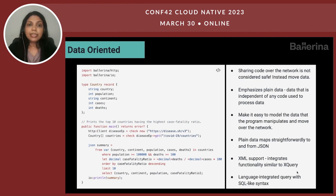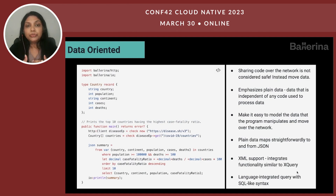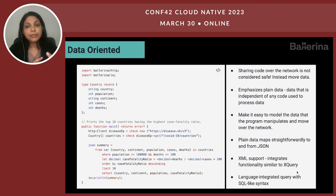In Ballerina, we consider it a data-oriented programming language. If we look at any program which works with many different entities or endpoints, what we usually share is data. In earlier days we shared code over the network in RPC-style applications, but we no longer do that due to security concerns. Instead, we move data around. That means we need better ways of representing data on the network as well as in memory. In Ballerina, we emphasize plain data concepts that are independent of any code and protocol — especially how we can access and transform data easily and intuitively.